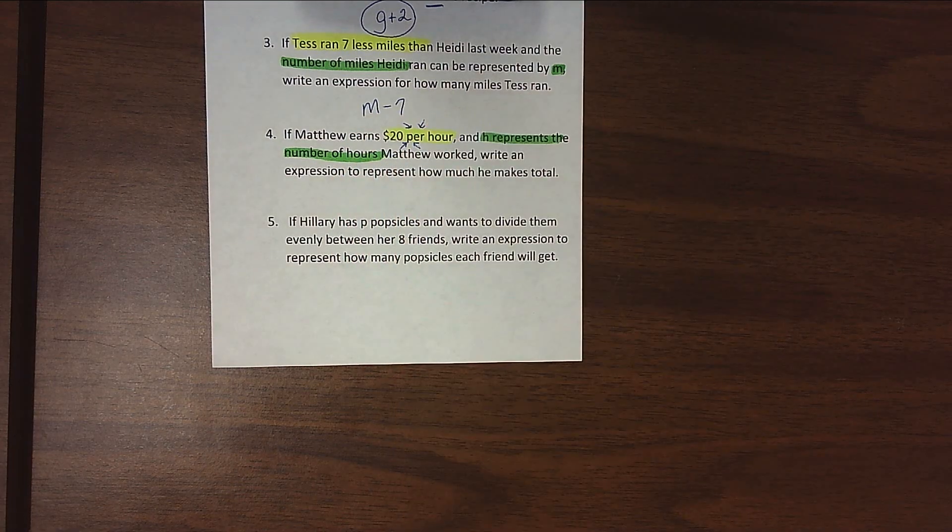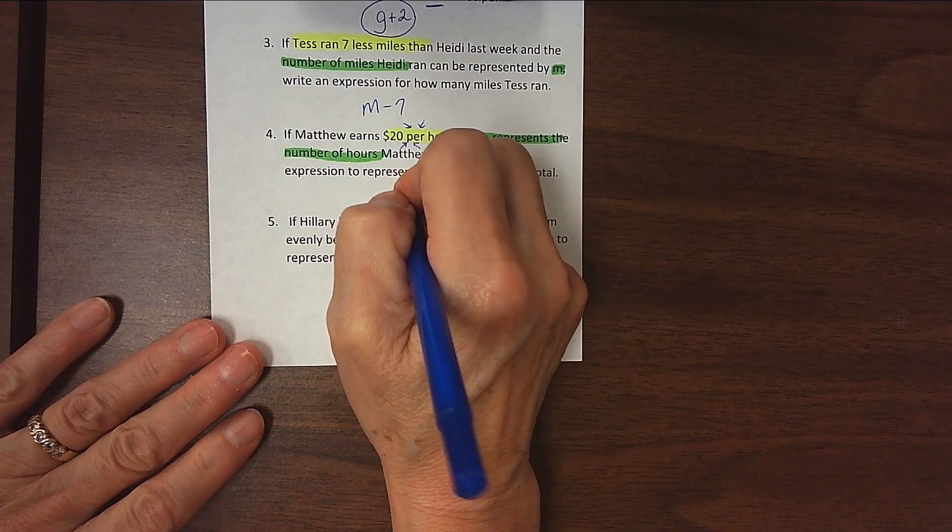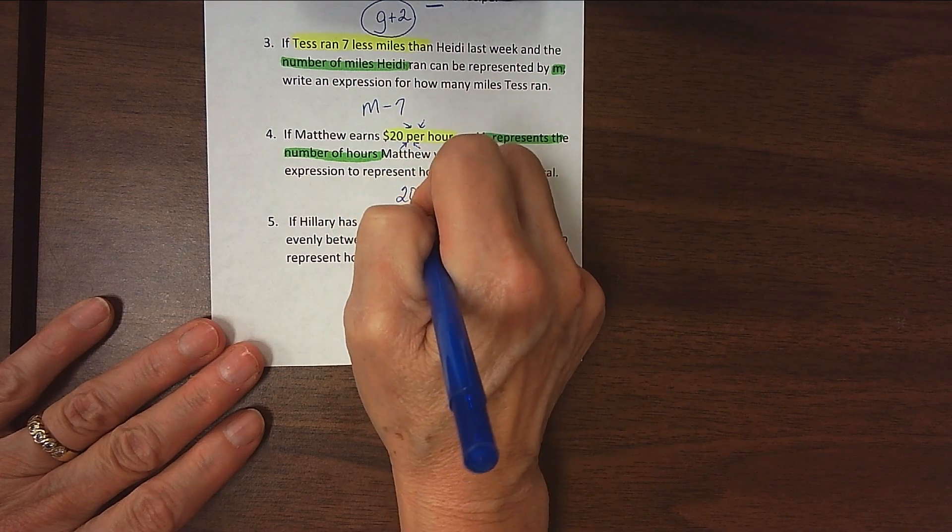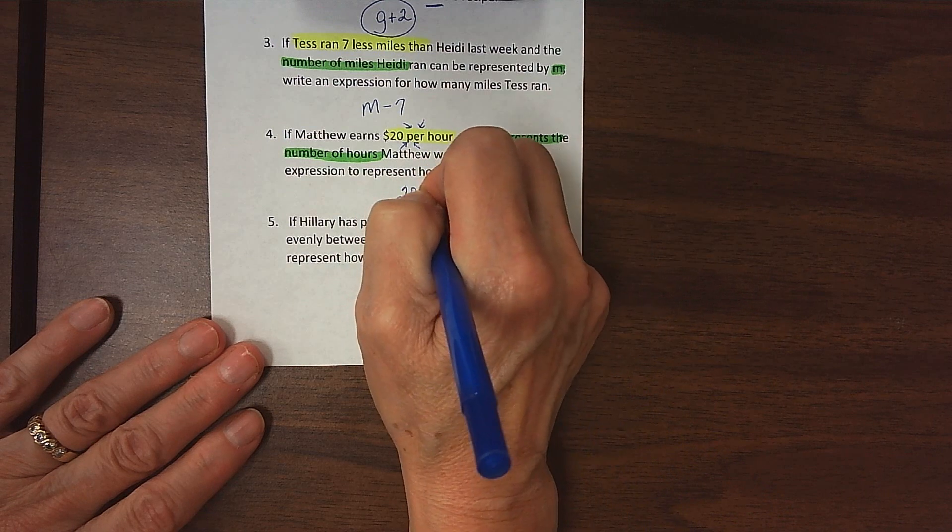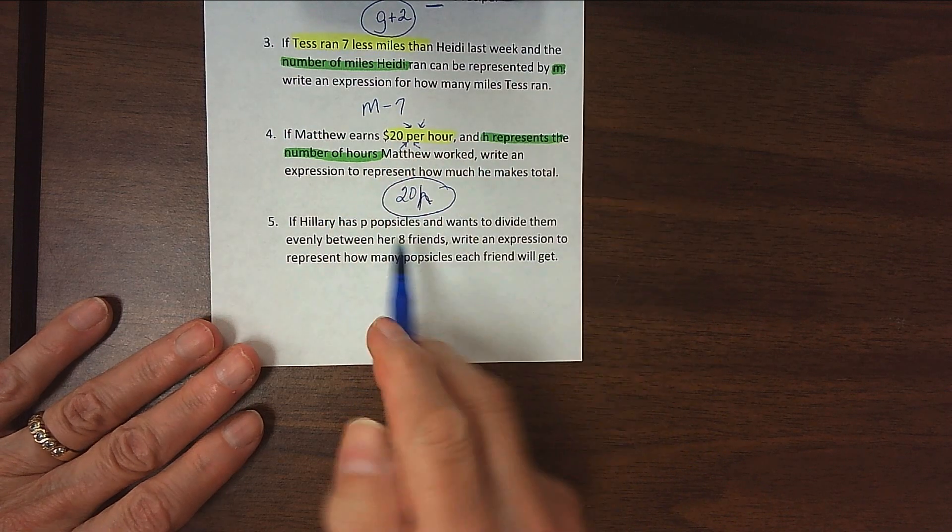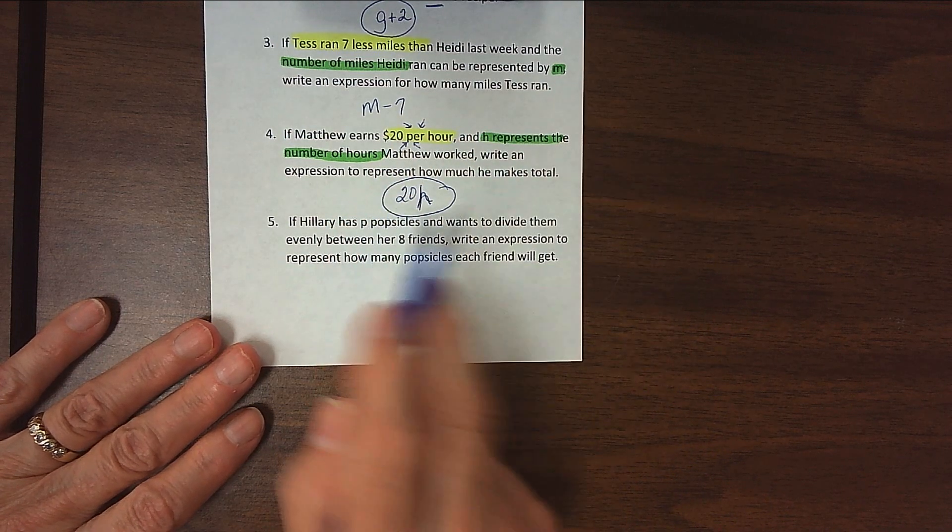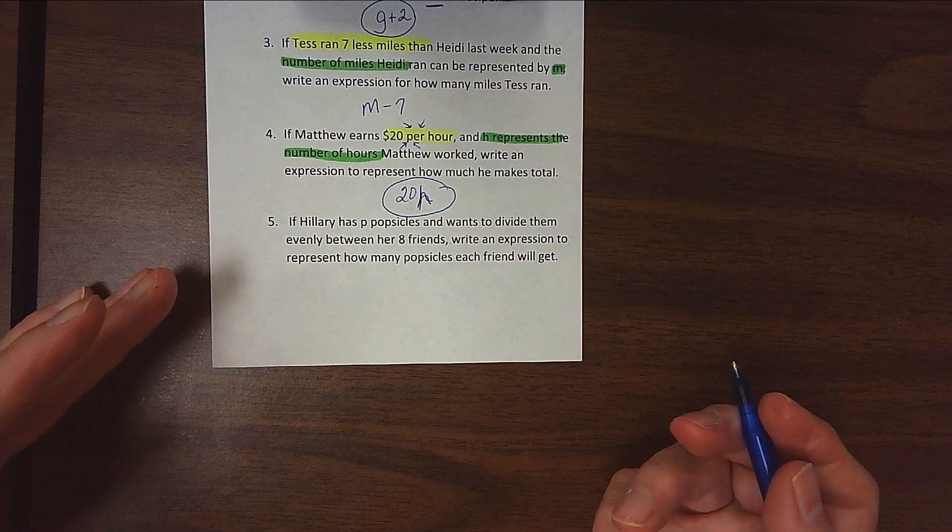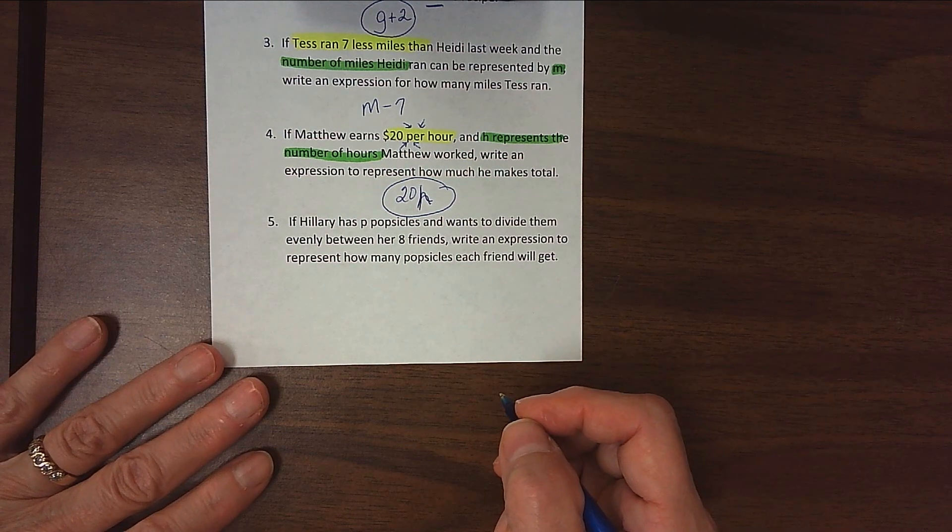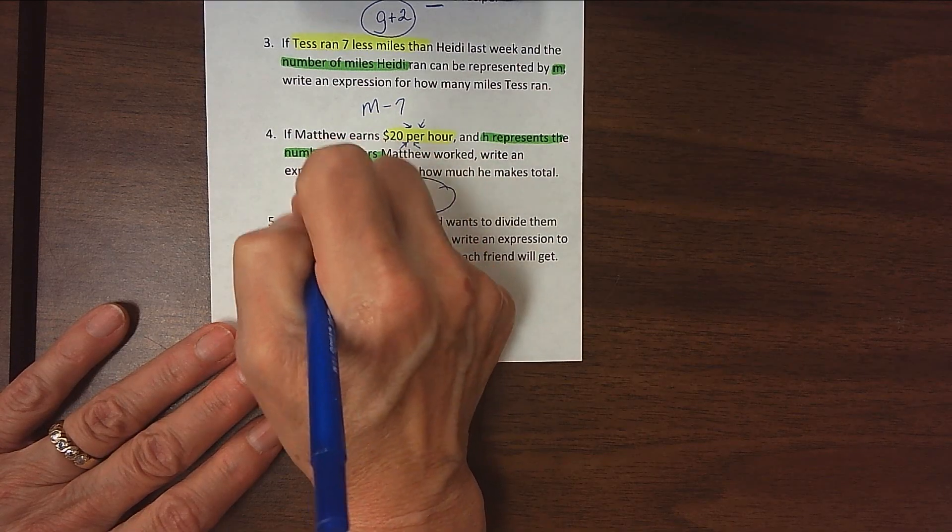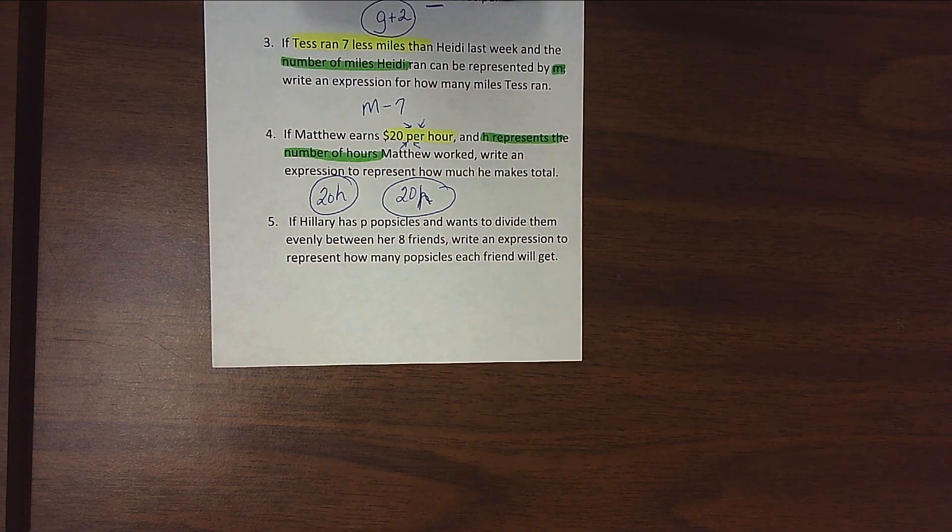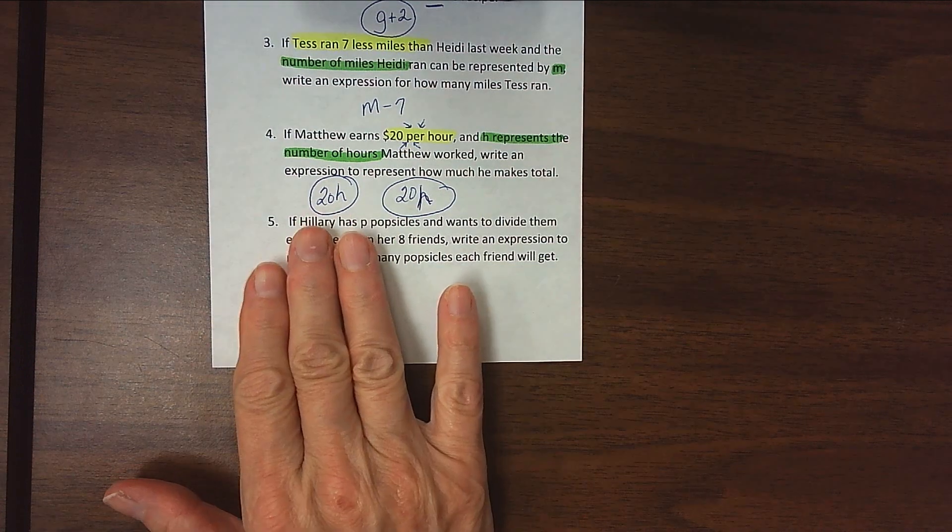So for every hour he works, he gets $20. So we would do 20 then times H. 20H, 20 times H. Again, no operation symbol because this is algebra, and we don't need that operation symbol between a number and a letter. I think I'll rewrite mine since that's so ugly there. There, 20 times H. And also, the number is always written first.